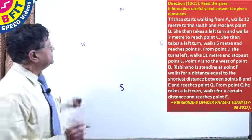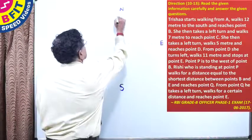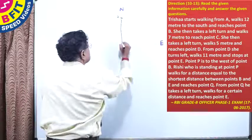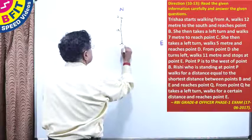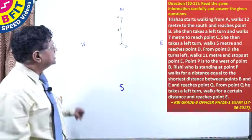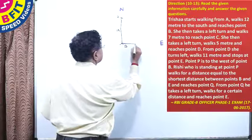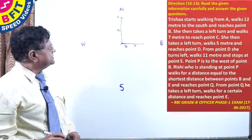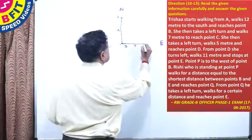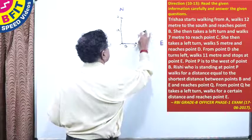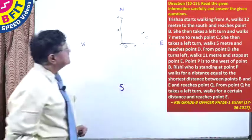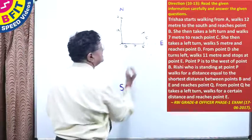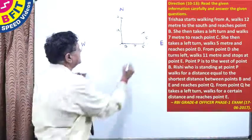Trisha starts walking from point A. She walks 12 meters to the south and reaches point B. She then takes a left turn and walks 7 meters to reach point C. She then takes another left turn and walks 5 meters to reach point D.